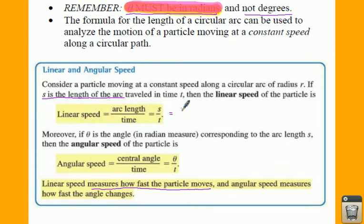If you have s over t, well we also know that s is equal to r theta, all divided by t. Another way you can look at this is if you separate the r from the theta and the t, and this is going to be important. These are three different ways you could represent linear speed.